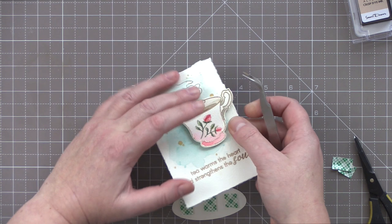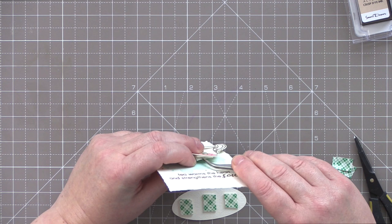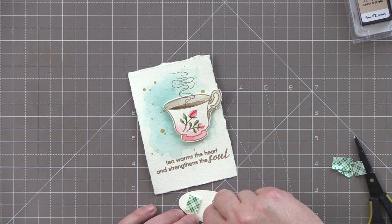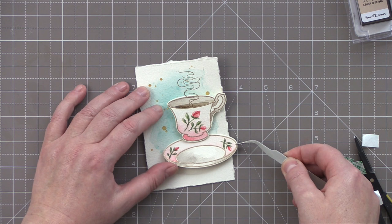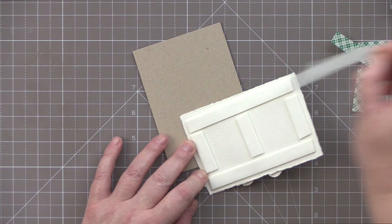I've added foam adhesive to the back of both images. Normally I would lay down the saucer first and then the teacup on top but because I want to line up the steam correctly I've attached the teacup first but only the top of the teacup and then taken off the foam backer from the base of the teacup so that I can tuck the saucer underneath in the correct place.